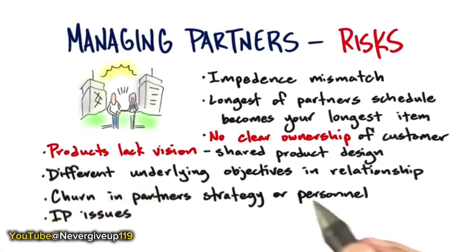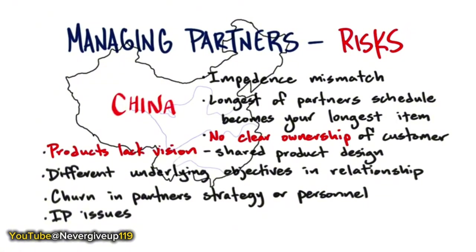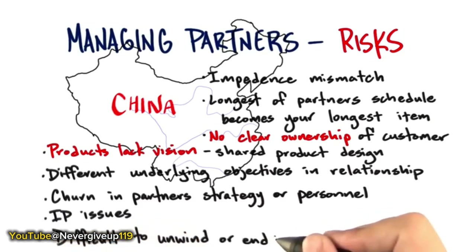Startups also worry about intellectual property issues. Typically not much of an issue in the United States, but a very important issue dealing with China. Intellectual property and the rule of law for trade, trademarks, and IP is not the same in the U.S. as it is in China, Russia, India, and other developing nations. Finally, these deals are difficult to unwind or end. What looked like a great idea when you were a struggling startup — 18 months later when revenue is rolling in, you realize you gave these large companies or joint ventures resources or assets you never would have agreed to two years later.